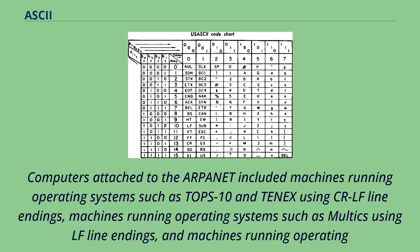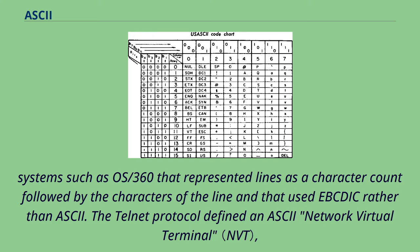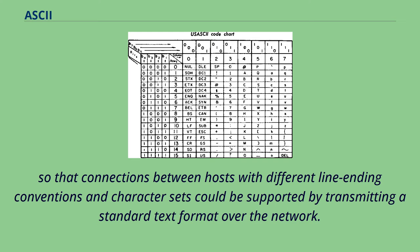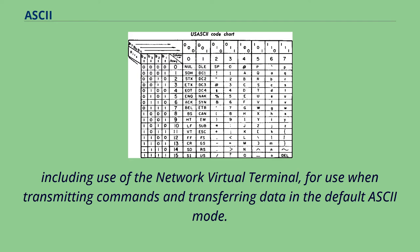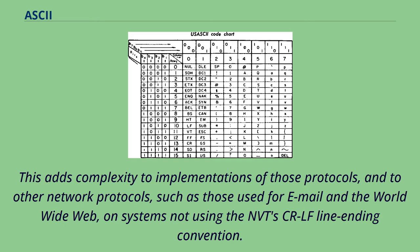Computers attached to the ARPANET included machines running operating systems such as TOPS-10 using CR-LF line endings, machines running Multics using LF line endings, and machines running OS/360 that represented lines as a character count followed by the characters of the line and used EBCDIC rather than ASCII. The Telnet protocol defined an ASCII network virtual terminal so that connections between hosts with different line ending conventions and character sets could be supported by transmitting a standard text format over the network. Telnet used ASCII along with CR-LF line endings, and software using other conventions would translate between the local conventions and the NVT. The file transfer protocol adopted the Telnet protocol, including use of the network virtual terminal, for use when transmitting commands and transferring data in the default ASCII mode. This adds complexity to implementations of those protocols and to other network protocols, such as those used for email and the World Wide Web, on systems not using the NVT's CR-LF line ending convention.